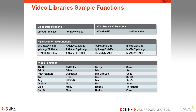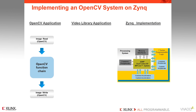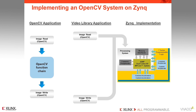Before looking at an example design, let's review how these video libraries are used. On the left-hand side, we have an overview of a system written with OpenCV libraries. It has some basic image I/O and frame-level operations, and at the core of the system, a chain of OpenCV library functions are used to perform the image processing. Now let's see how this code is implemented on a Zynq All-Programmable SoC. In the final design, the frame-level processing will remain as is — this code can be directly compiled on the Zynq processing system.